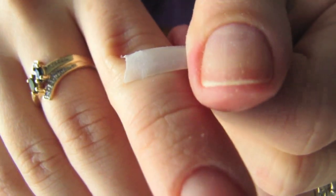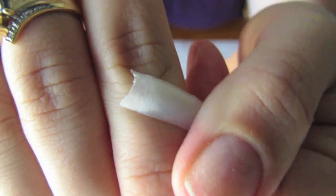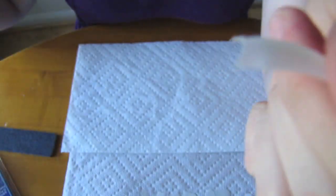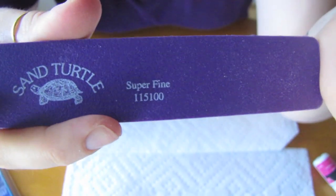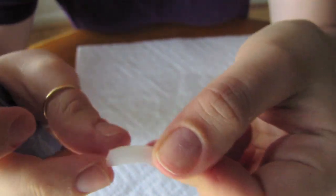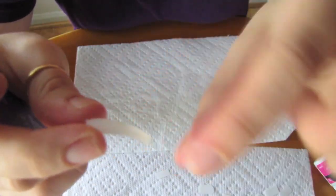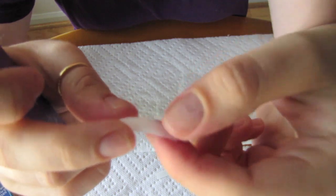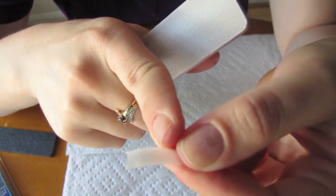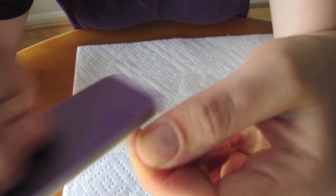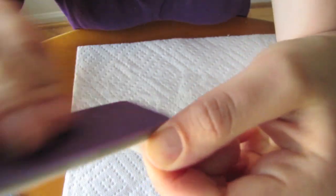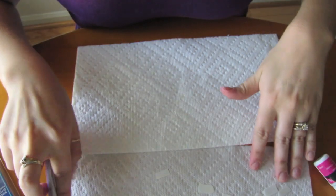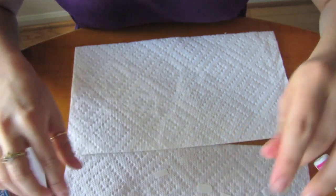So now I've filed down the tip and I'm going to take my super fine buffer and lightly buff. Now if you were going to use the whole tip as your length, you would buff the entire tip. I'm going to wind up cutting it, so I'm just going to buff about half the nail. You want to repeat this whole process for all the rest of your nails. And now we're ready to apply our tips.